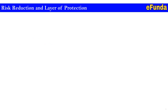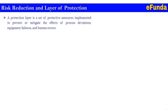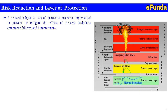For better understanding of a Safety Instrumented System or Emergency Shutdown System, we follow a structured sequence. Risk reduction and layers of protection: a protection layer is a set of protective measures implemented to prevent or mitigate the effect of process deviations, equipment failure, and human error. The layers include process control, process alarm, trip-level alarm, safety layer, active protection layer, passive protection layer, and emergency response layer.